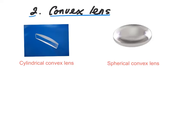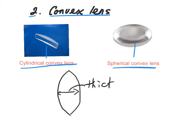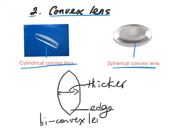Now let's look at convex lenses. There are two types of convex lens. The first one is cylindrical convex lens. The other type is spherical convex lens. For a convex lens, the middle part of the lens is thicker than the edge. This type of lens we call biconvex lens. We also have another type called plano-convex lens.